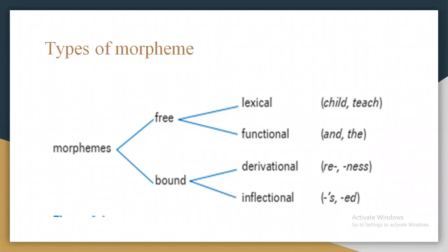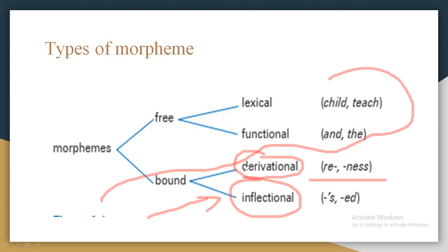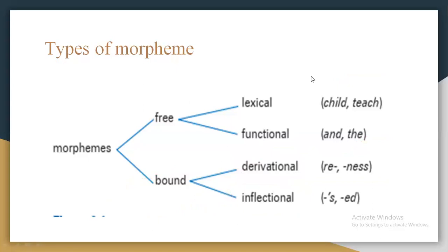Morphemes can be divided into free and bound. Free can further be divided into lexical morphemes and functional morphemes. Lexical morphemes have fixed meaning; functional morphemes have grammatical meaning only — for example, conjunctions like 'and,' articles like 'the,' prepositions, and determiners all come under functional morphemes. All content words come under lexical morphemes. Our target is to reach inflectional and derivational morphemes — that's why this extra information is provided.